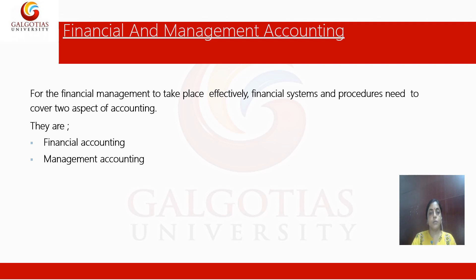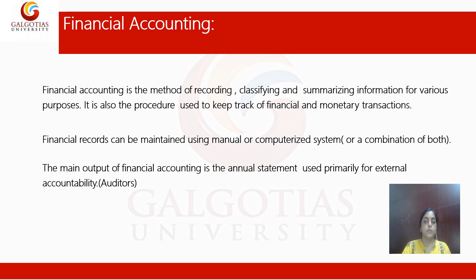Now, financial and management accounting. For financial management to take place efficiently, the financial system needs to cover two aspects of accounting: financial accounting and management accounting. Financial accounting is a method of recording, classifying, and summarizing information for various purposes, and is the procedure used to keep track of financial and monetary transactions. Financial records can be maintained using manual or computerized systems. The main output of financial accounting is the annual statement, used primarily for external accountability — that is the auditor function.